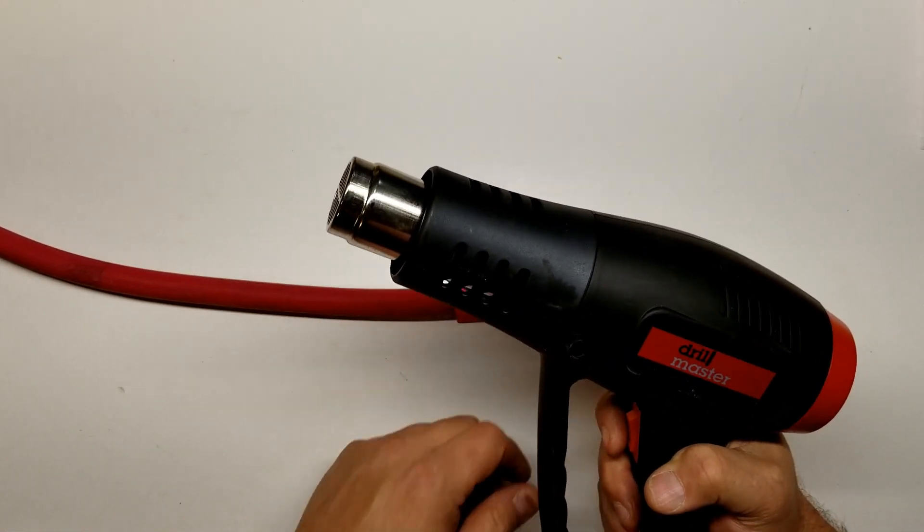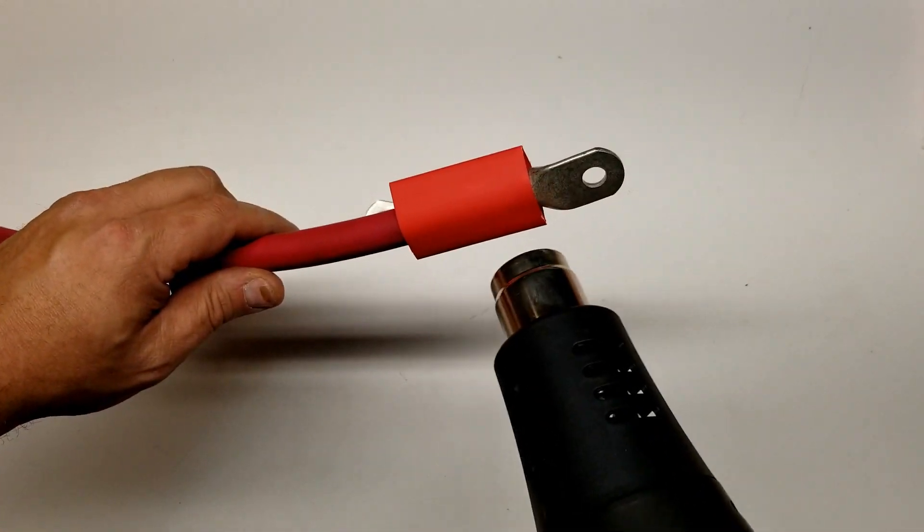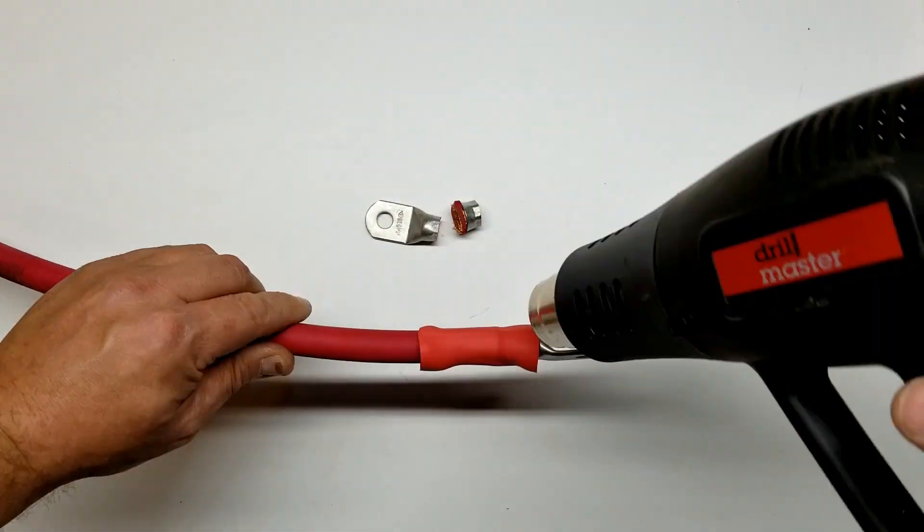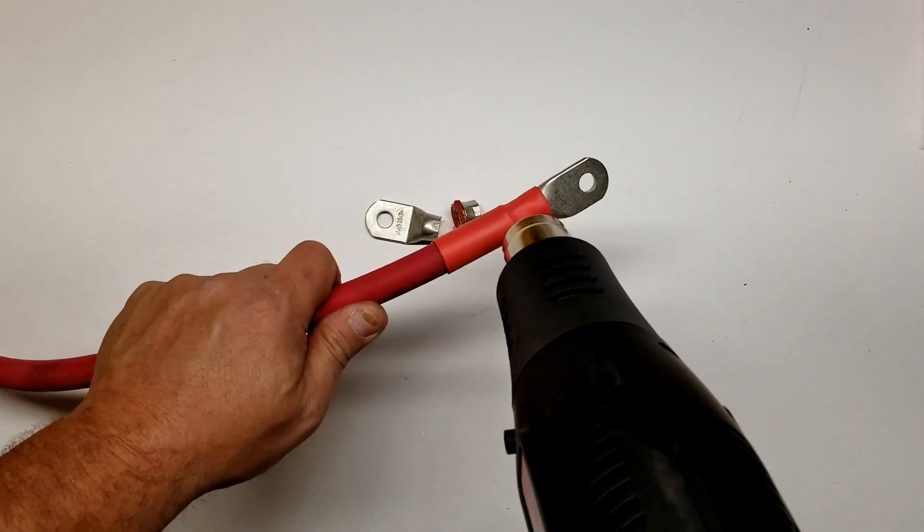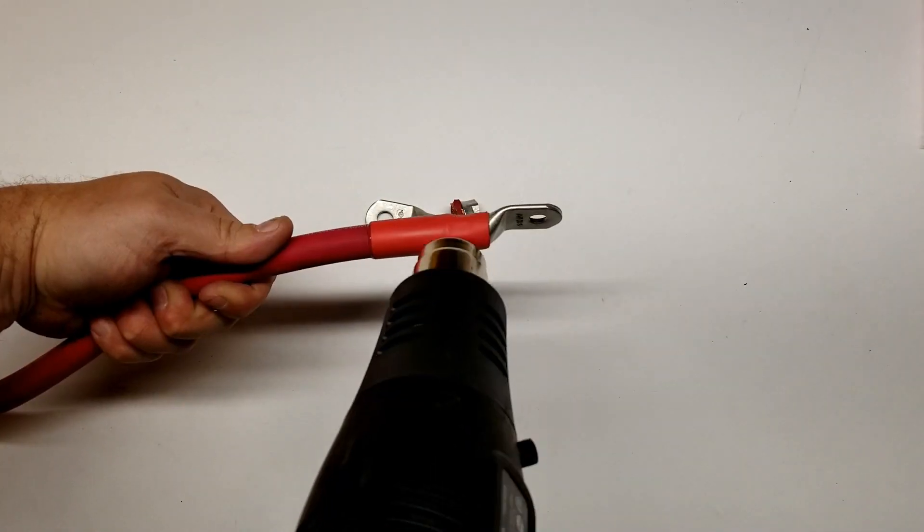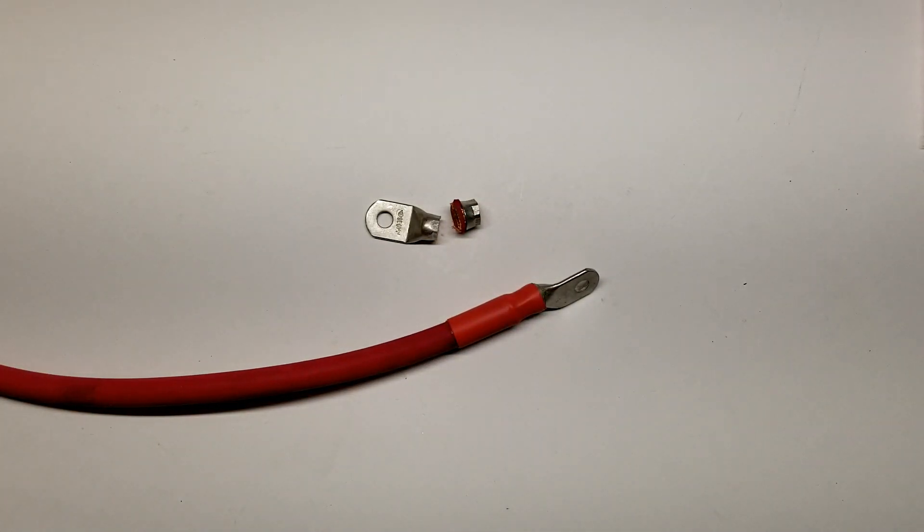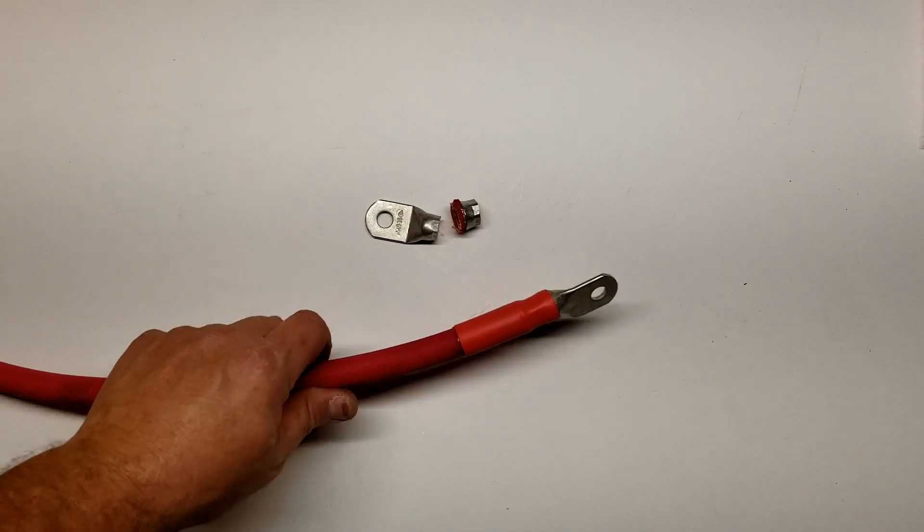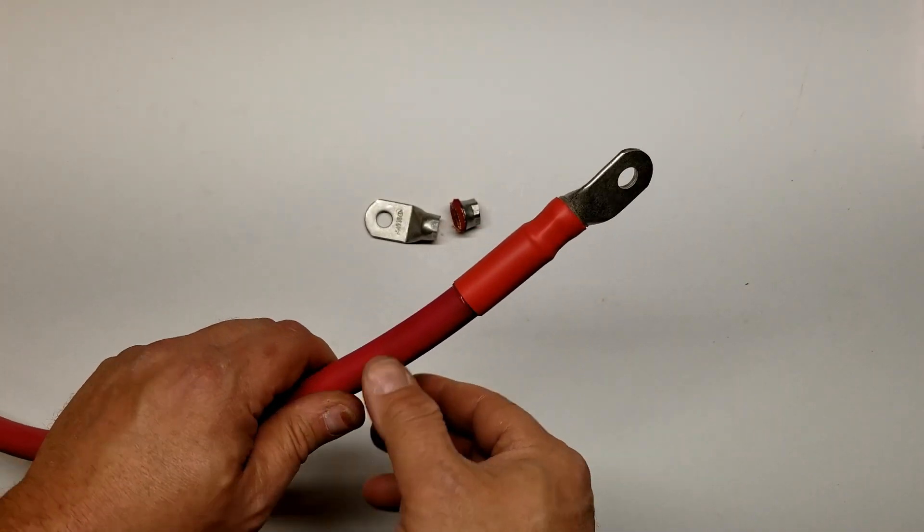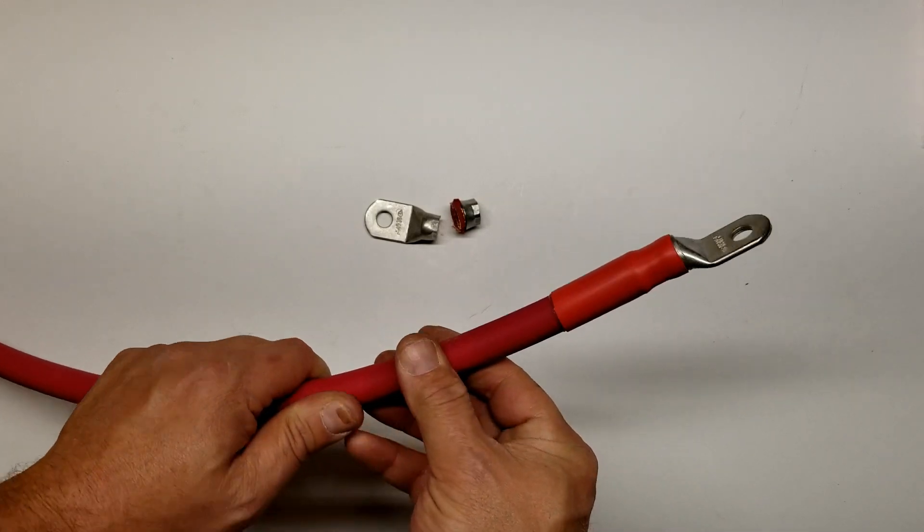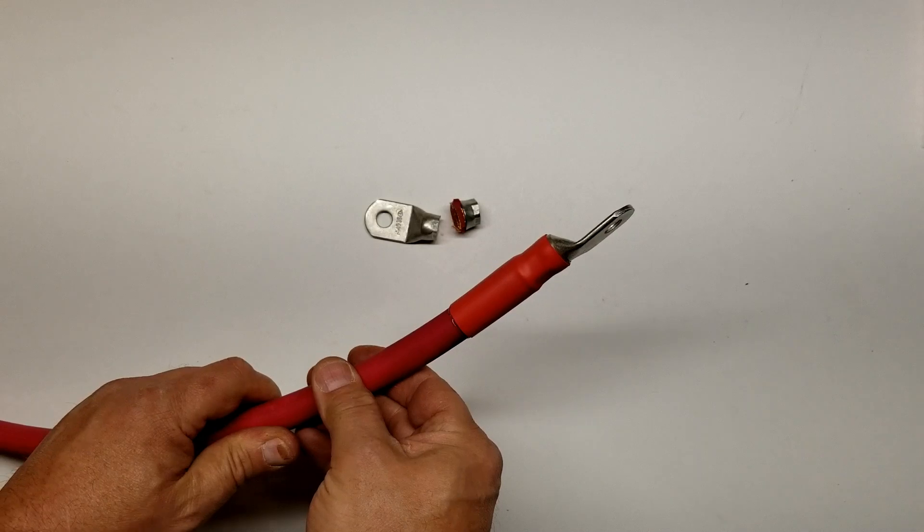Let me get this cheap Harbor Freight heat gun warmed up and then I'll show you shrinking the tubing. Okay, here we go. You can see the adhesive starting to ooze out the ends there. That's how you know you got a real good seal - when you can see the adhesive coming out.